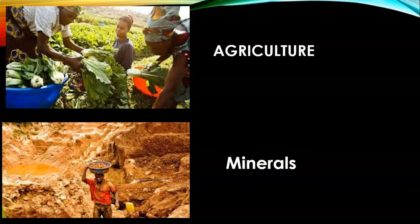Agriculture is a major economic activity of the African continent. Wheat is grown in the temperate grassland, Mediterranean region, and the Nile Valley. Rice is cultivated in the Guinea Coast, Mozambique, Madagascar, and Nile Valley. Maize and millets are grown all over the plateau region. Cotton is a key cash crop of Africa — Egypt and Sudan cultivate the best quality long-staple cotton in the world. Coffee is grown in Ethiopia. Ghana is the chief producer of cocoa. Oil palm is cultivated in West African countries. Sugarcane, rubber, sisal, and tobacco are major crops mostly grown in East African countries.